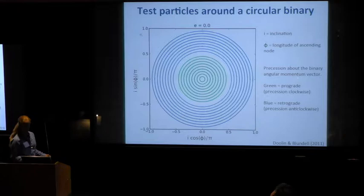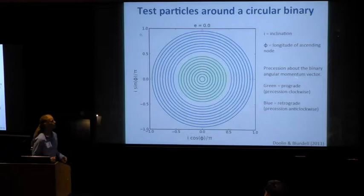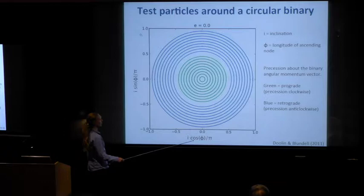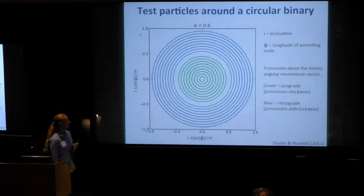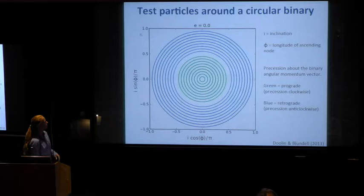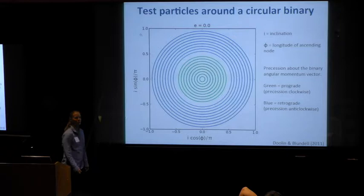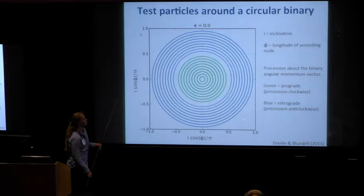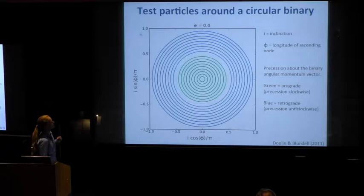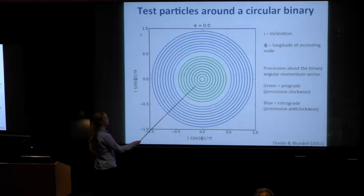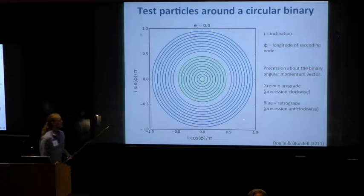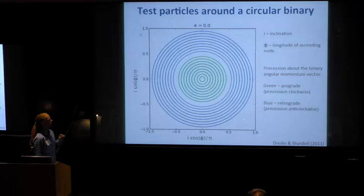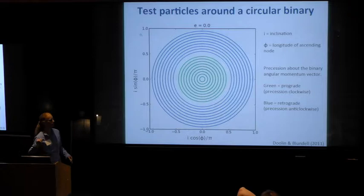I'll explain this phase diagram because I'll use it later when things get more complicated. This is I·cos(φ) versus I·sin(φ), where I is the inclination of the test particle to the binary angular momentum, and φ is the longitude of the ascending node. The distance from the origin is the inclination, and the azimuthal angle is the longitude of the ascending node. For the circular binary, test particles simply precess with the same inclination, so constant inclination leads to a circle in this diagram. Green orbits are closer to alignment, precessing about the angular momentum vector; blue orbits are closer to counter-alignment.